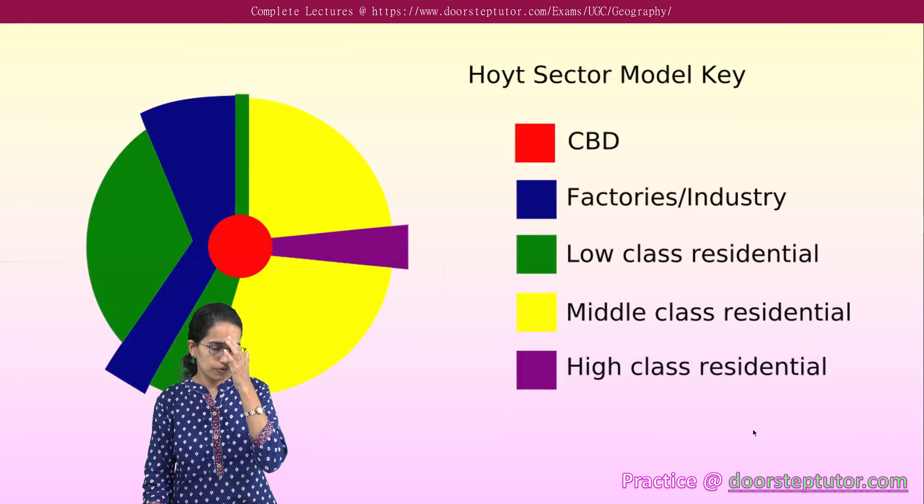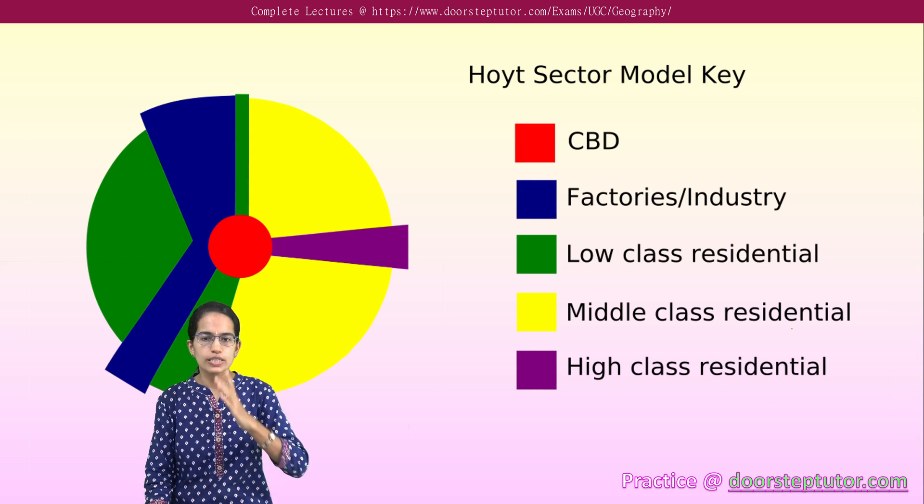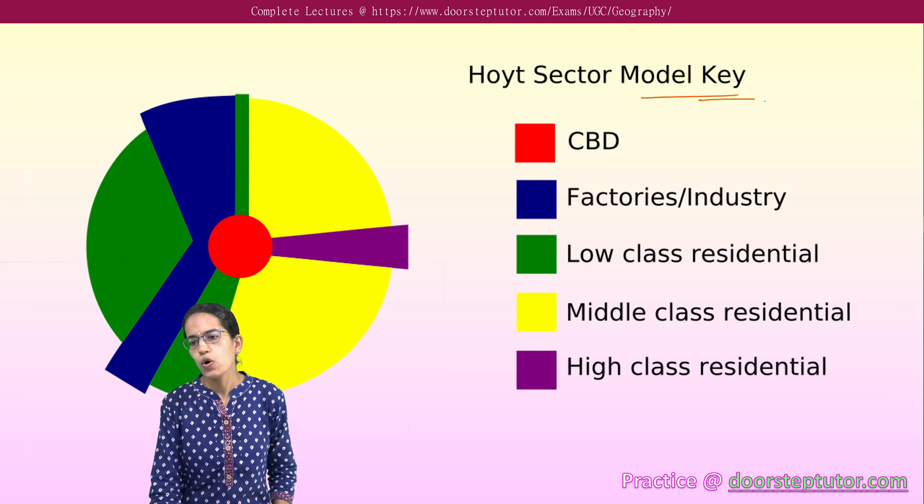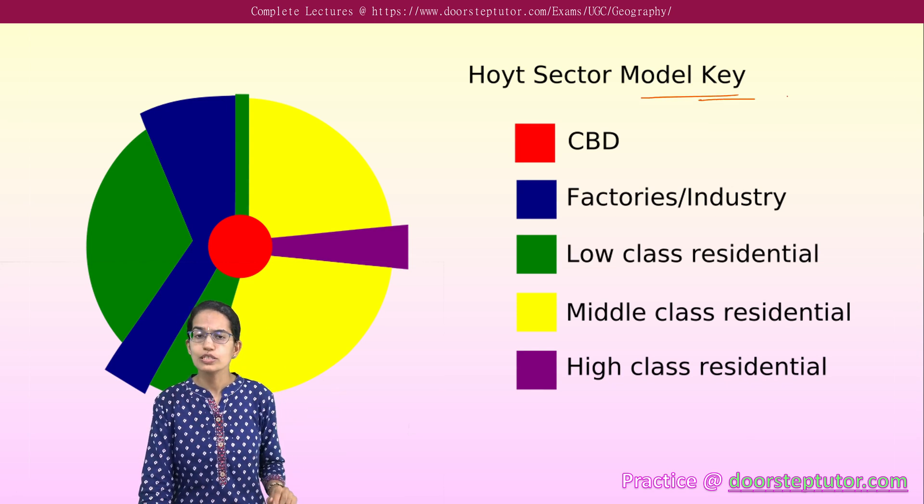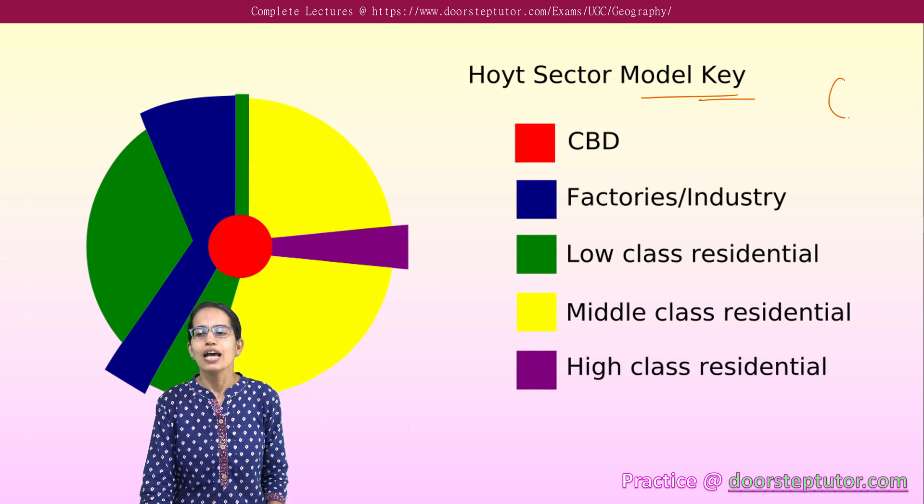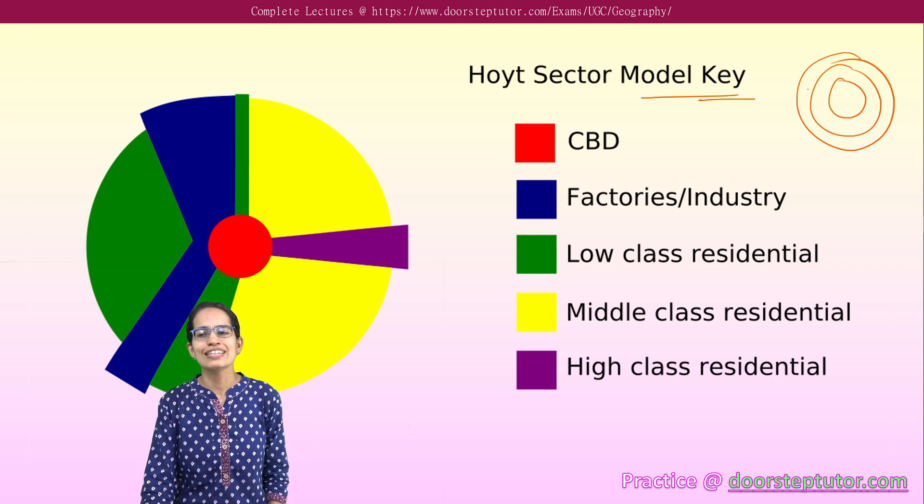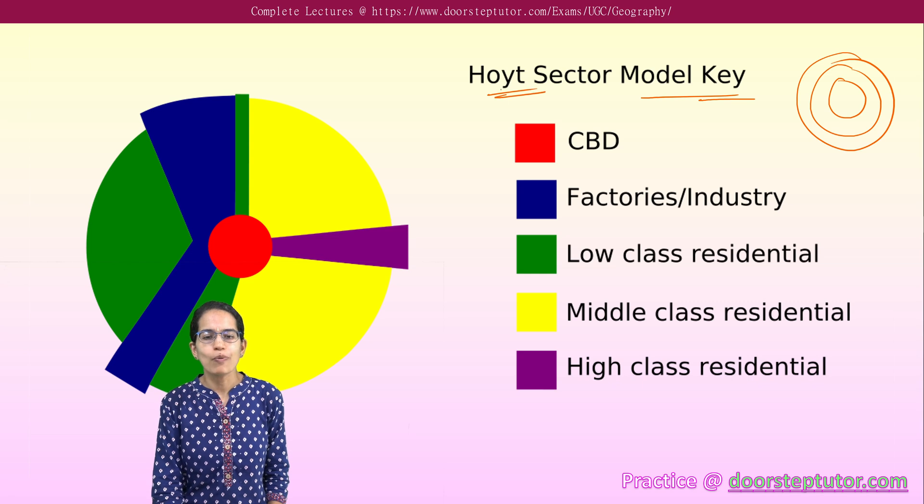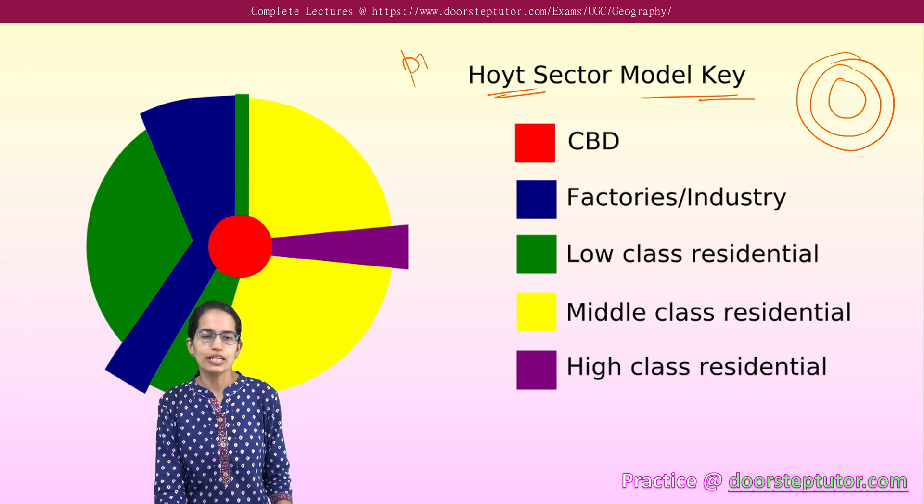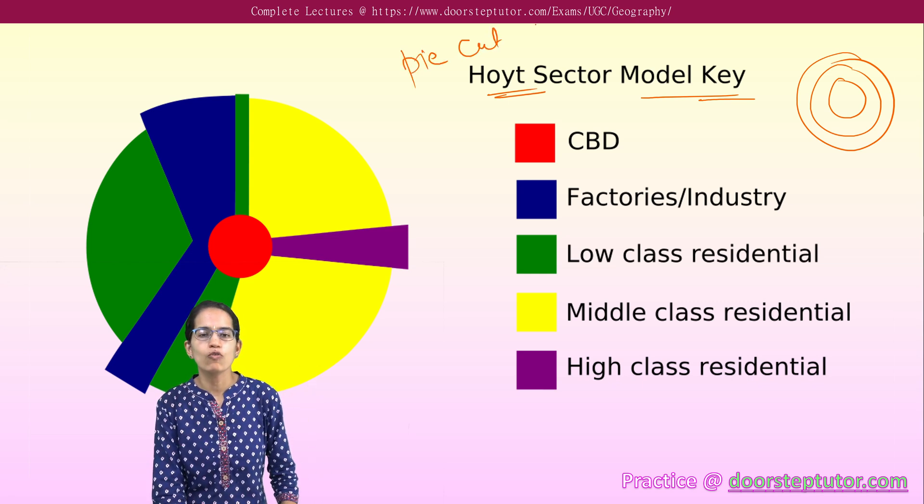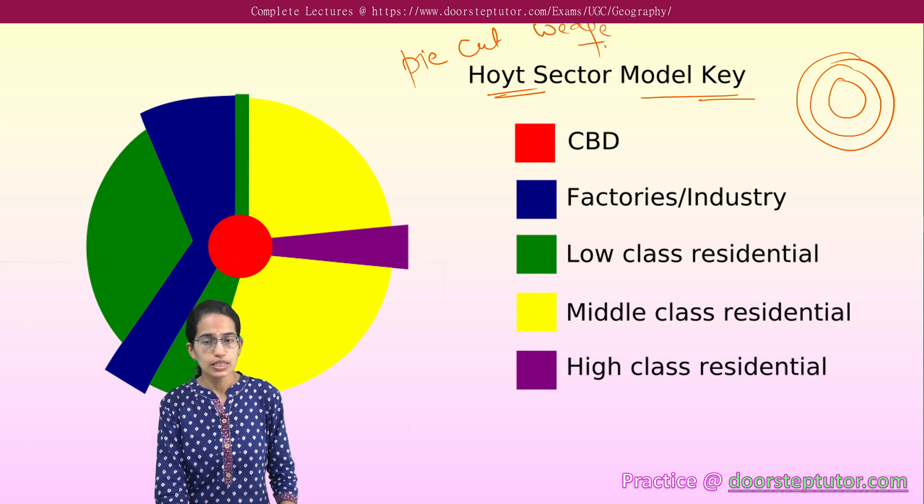The next important concept that we would understand is the Hoyt's sector model. Burgess model was given somewhere in 1920s and it is similar to the concentric rings of the tree. Hoyt model, if you want to find an analogy, this is a simple pie cut of a wedge.